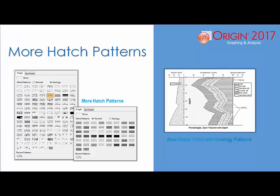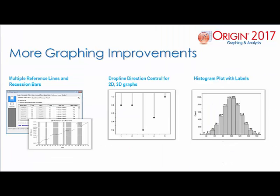Origin 2017 also provides more fill patterns for column, area, and contour plots, including a large set of standard USGS geologic patterns. In addition, users can also create their own patterns using EMF files. Other improvements include multiple reference lines and the ability to initialize alternating shading between them, drop-line direction control for 2D and 3D graphs, histograms with labels, and more graphic object support in 3D graphs.